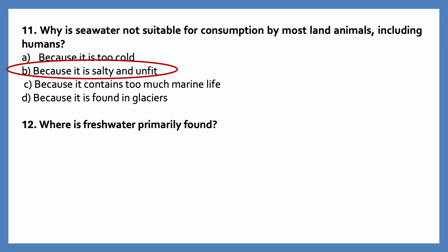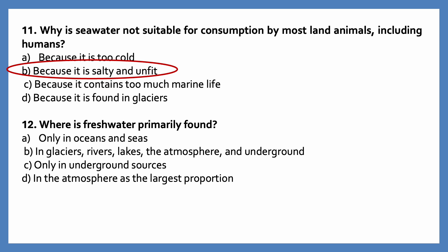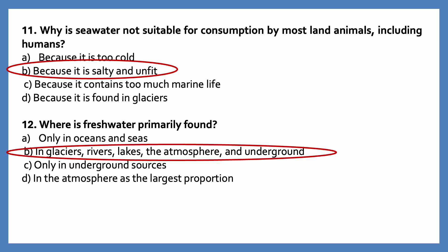Where is freshwater primarily found? Options are: only in oceans and seas; in glaciers, rivers, lakes, the atmosphere and underground; only in underground sources; in the atmosphere as the largest proportion. The correct answer is freshwater is primarily found in glaciers, rivers, lakes, the atmosphere and underground.